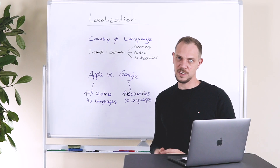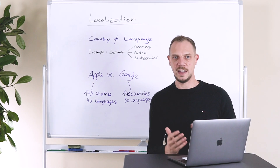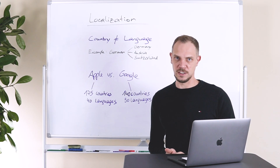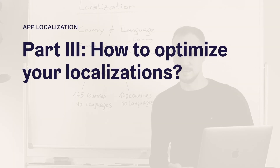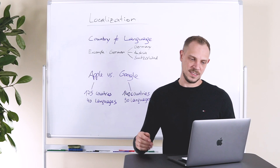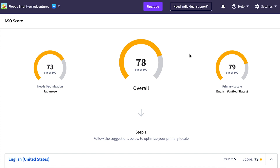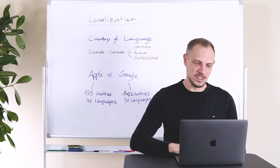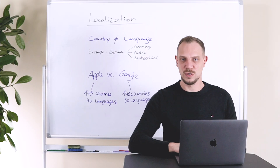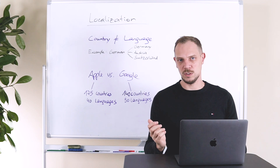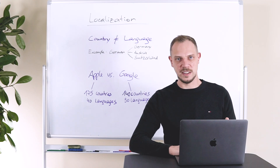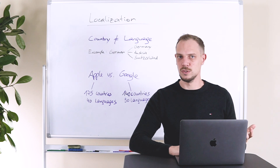Now that we've learned the basics of localization, let's check out how we can manage and optimize our localizations with the help of AppRadar. Within AppRadar you get an App Store optimization score for every language you're currently supporting. Managing all those languages can be exhausting when doing it directly in the App Stores, but AppRadar helps you set priorities and figure out where to focus next.